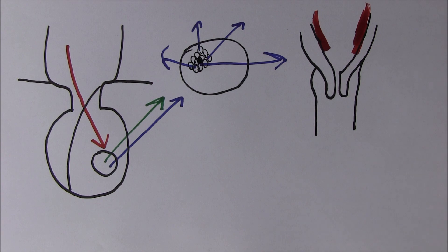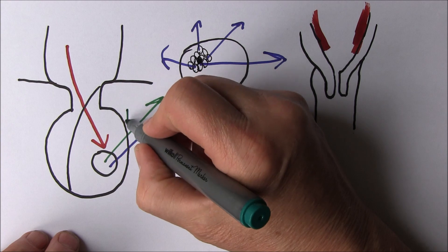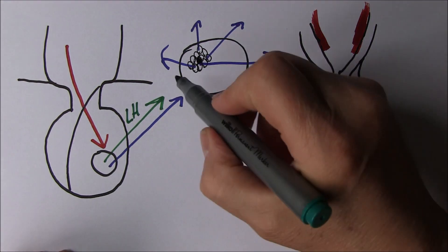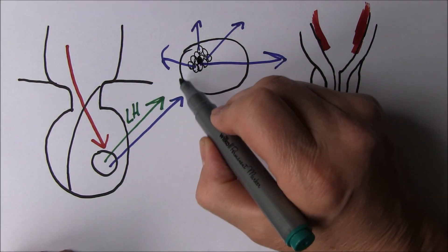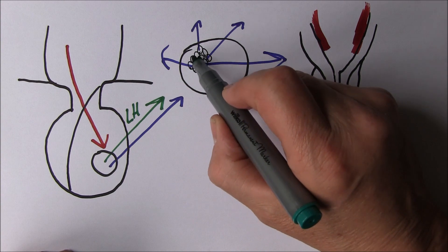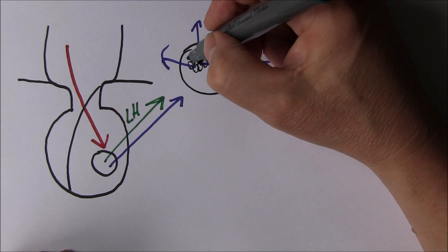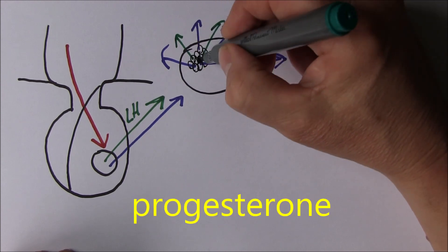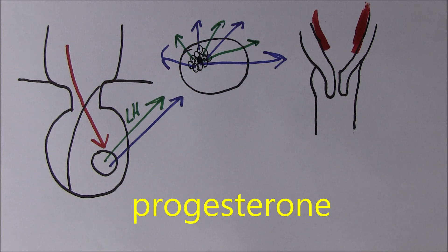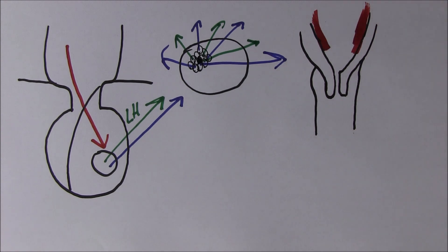The luteinizing hormone causes the release of the ovum — it stimulates ovulation. As well as that, the luteinizing hormone changes the granulosa cells into luteal cells, and the luteal cells secrete progesterone, mostly in the second half of the menstrual cycle. That's going to maintain the endometrium for about 14 days before it discharges in menstruation.